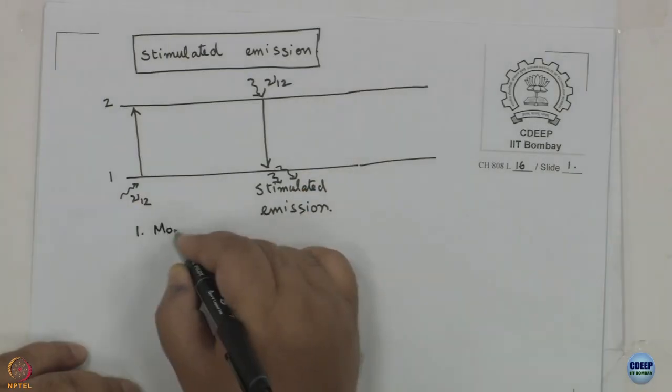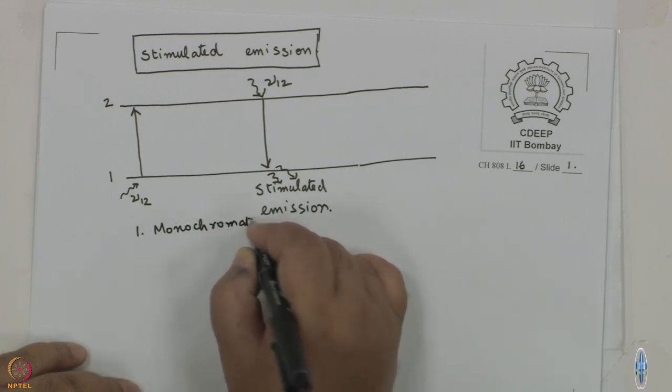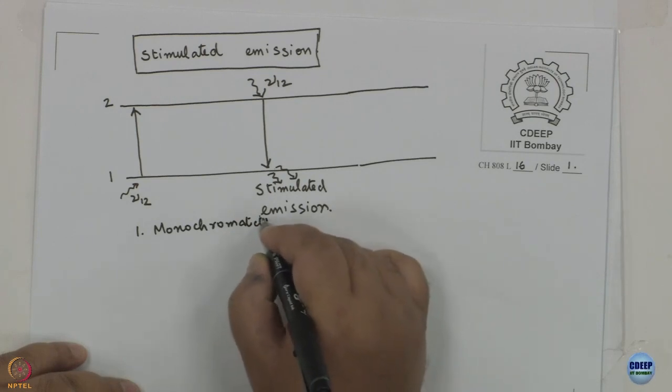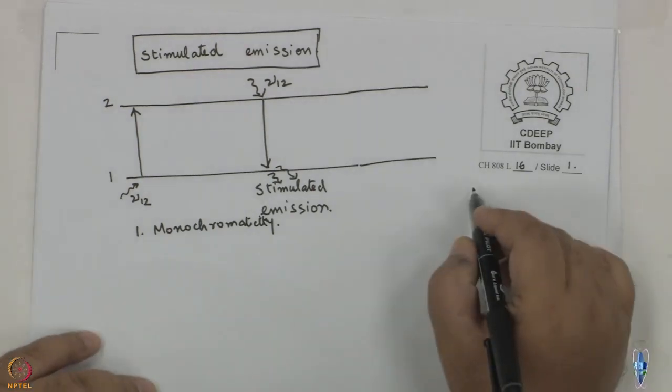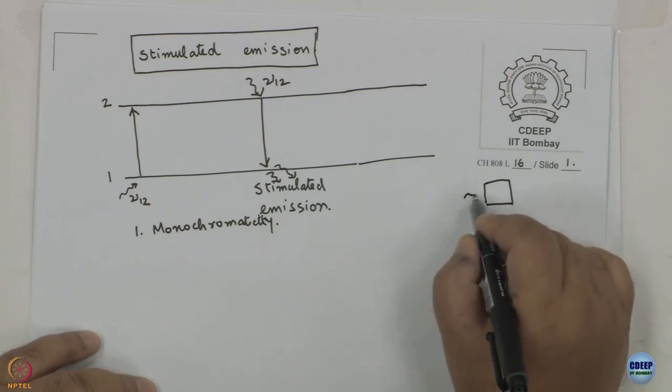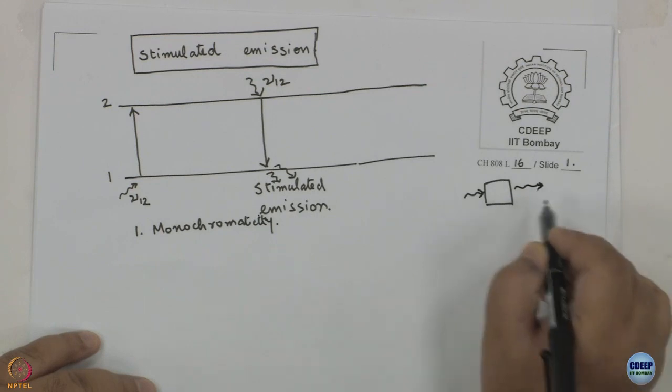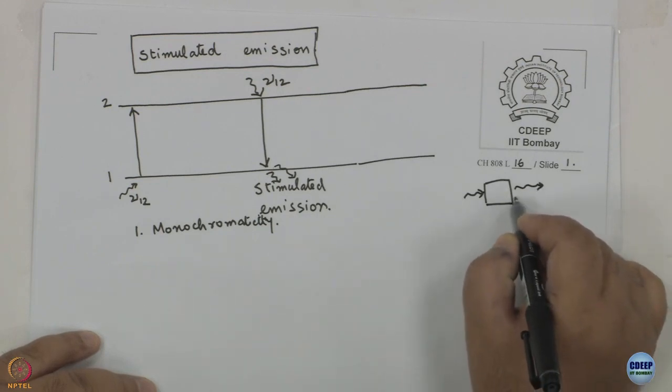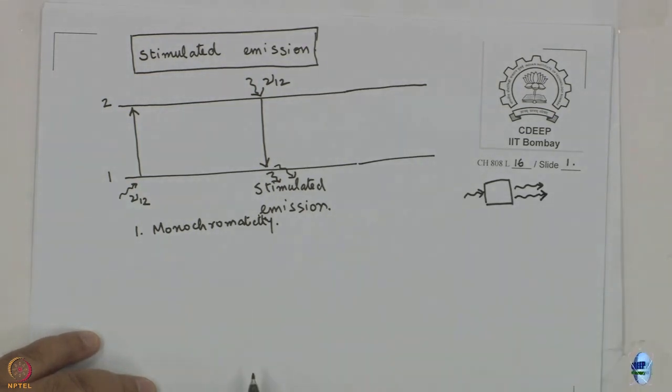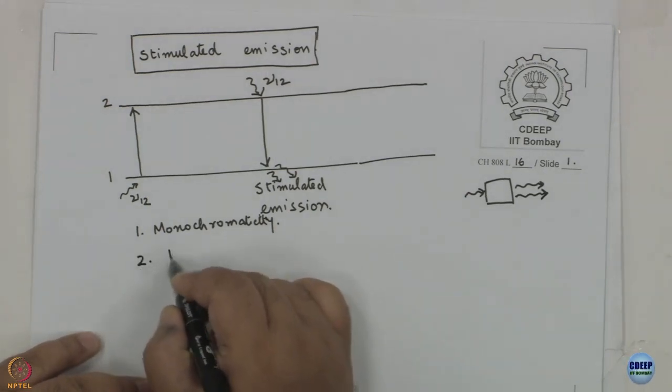There are several properties associated with light that comes out as a result of stimulated emission that may not always be present for spontaneous emission. First, the frequency of the light that comes out is exactly the same — ν₁₂ — so you get monochromaticity. Secondly, if light comes in from one direction through a sample, the light that comes out as a result of stimulated emission will follow the same path, so in stimulated emission you get directionality.